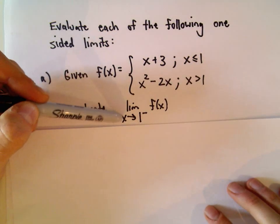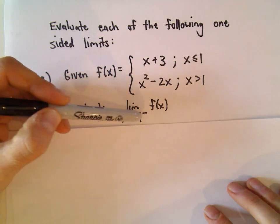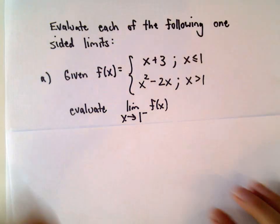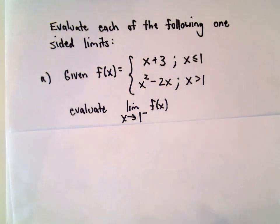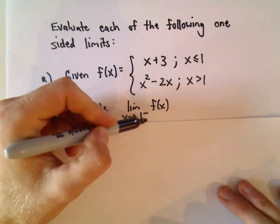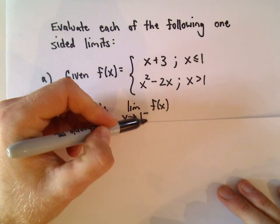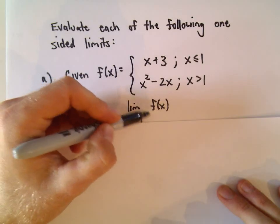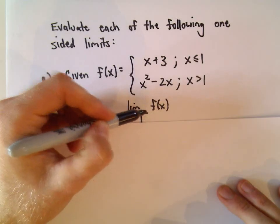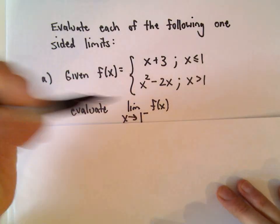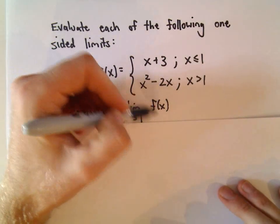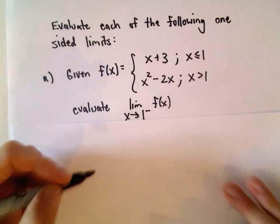We want to figure out the limit as x approaches 1 from the left. Notice the little minus sign is kind of to the right and above — that means we're coming from the left of our function.